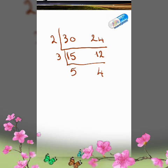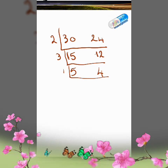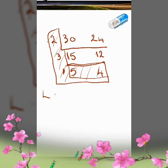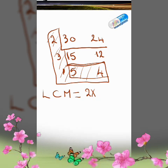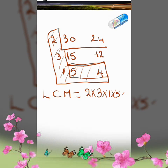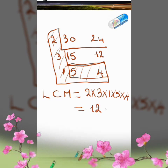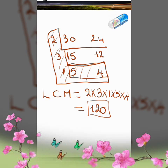Now 4 and 5 have nothing common between them, so only 1 is common and I stop here. Taking the full L shape, the LCM is all these numbers multiplied: 2 times 3 times 1 times 4 times 5. That is 6 times 5 equals 30, and 30 times 4 equals 120. So the LCM for 30 and 24 is 120.